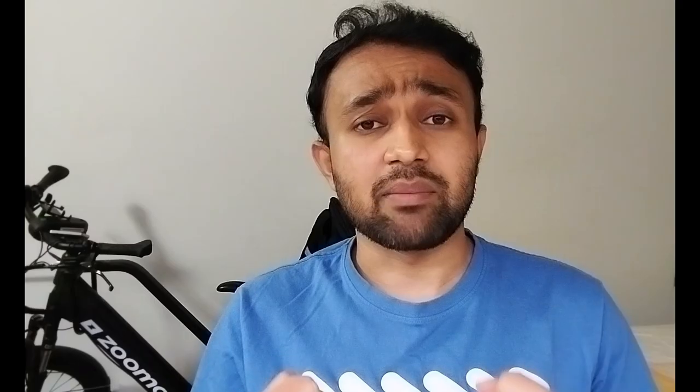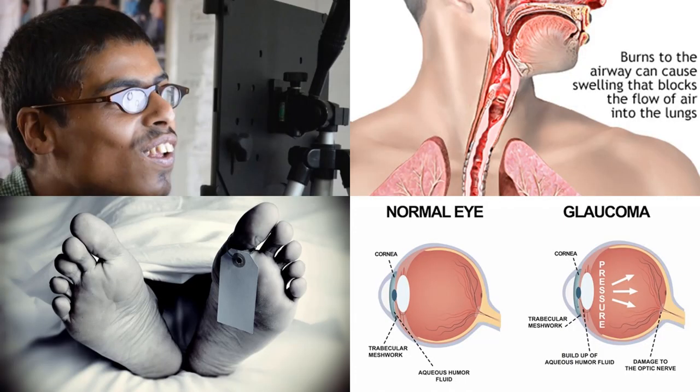There is a controversial argument in science about whether tear gas particles can produce cyanide at the tissue level. If we consider the long-term effects, you can see glaucoma, complete blindness, damages to the respiratory system, and ultimately deaths.